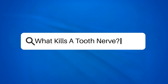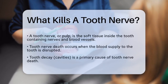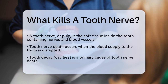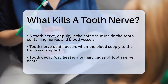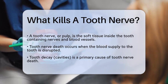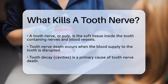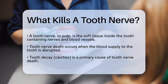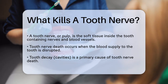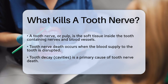What kills a tooth nerve? Have you ever wondered what could cause a tooth nerve to die? It's an important question, especially if you're experiencing some dental issues. Let's break it down. A tooth nerve, or pulp, is the soft tissue inside your tooth that contains nerves and blood vessels. For a tooth nerve to die, the blood supply to the tooth needs to be disrupted. So what are the main reasons this happens?